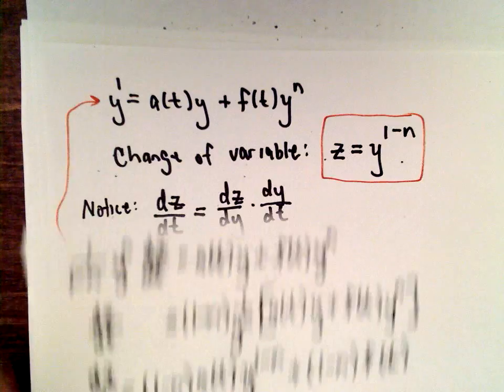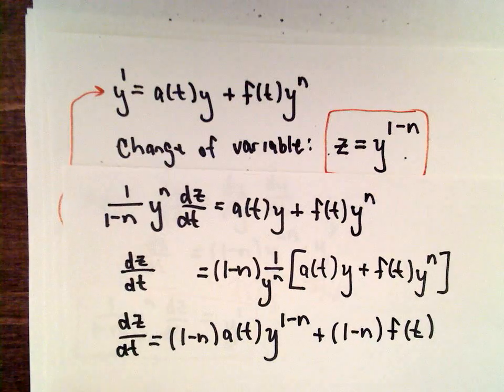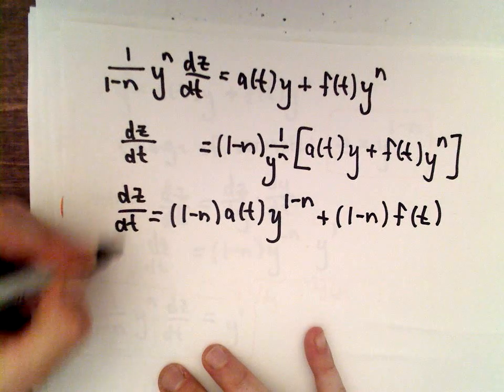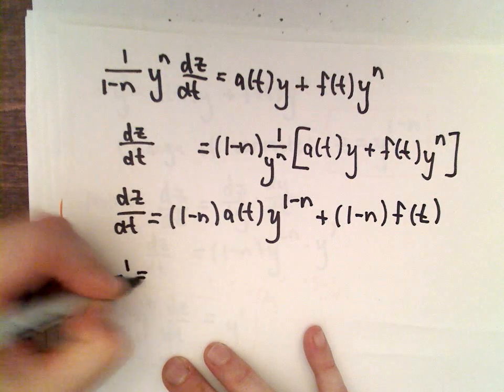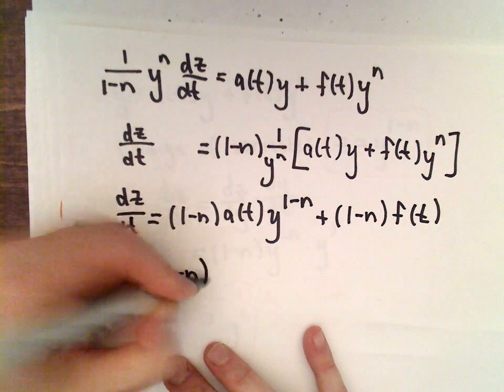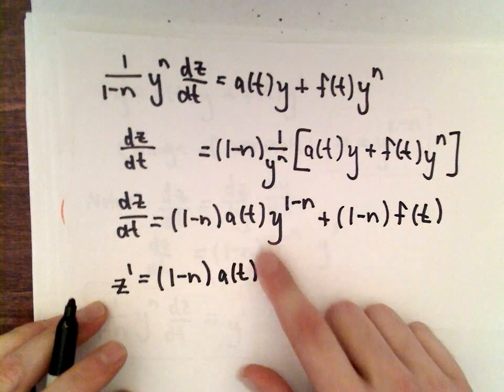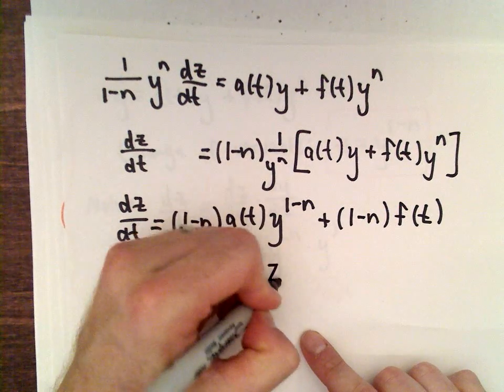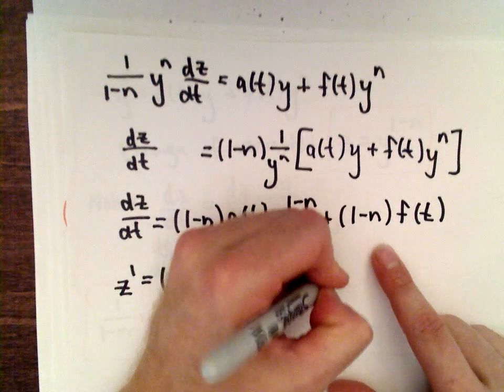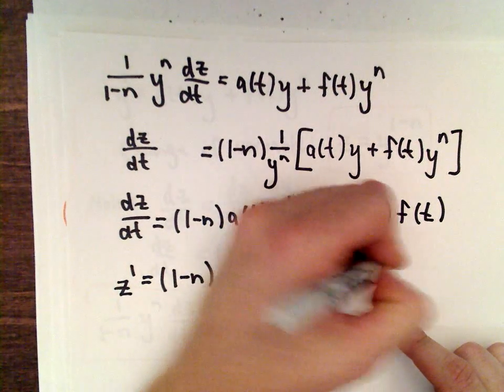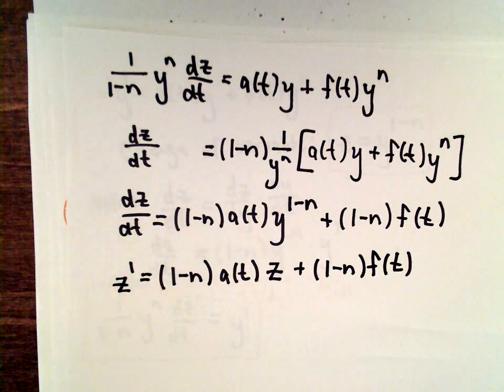And now, what was our substitution? We said that z was equal to y raised to the 1 minus n power. So we can just plug that in. So now we have dz/dt, or z', that equals (1 minus n) multiplied by a(t). I've got y to the 1 minus n, but we said we're going to replace that with z. And then we still have this (1 minus n) multiplied by f(t). And hey, now we are in business.